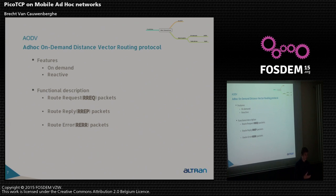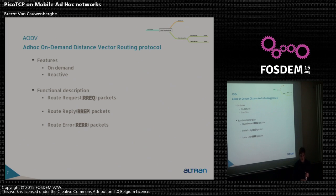In contrast, on-demand routing is reactive, building routes via a route request only when required. The advantage of proactive routing is that having all routes available means data is sent faster without the overhead of building tables. The reactive protocol reacts more responsively to changes in routing information.